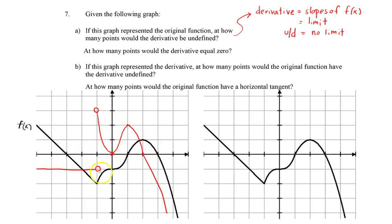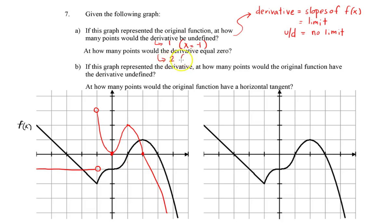When you look at this, there are clearly slopes everywhere along this function, and there is one point where the derivative is undefined. Then, how many points where the derivative equals zero? Well, wherever I have a horizontal tangent — that's at x equals zero and x equals two. So: one point undefined, at x equals negative one, and two points where the derivative equals zero, at x equals zero and x equals two.